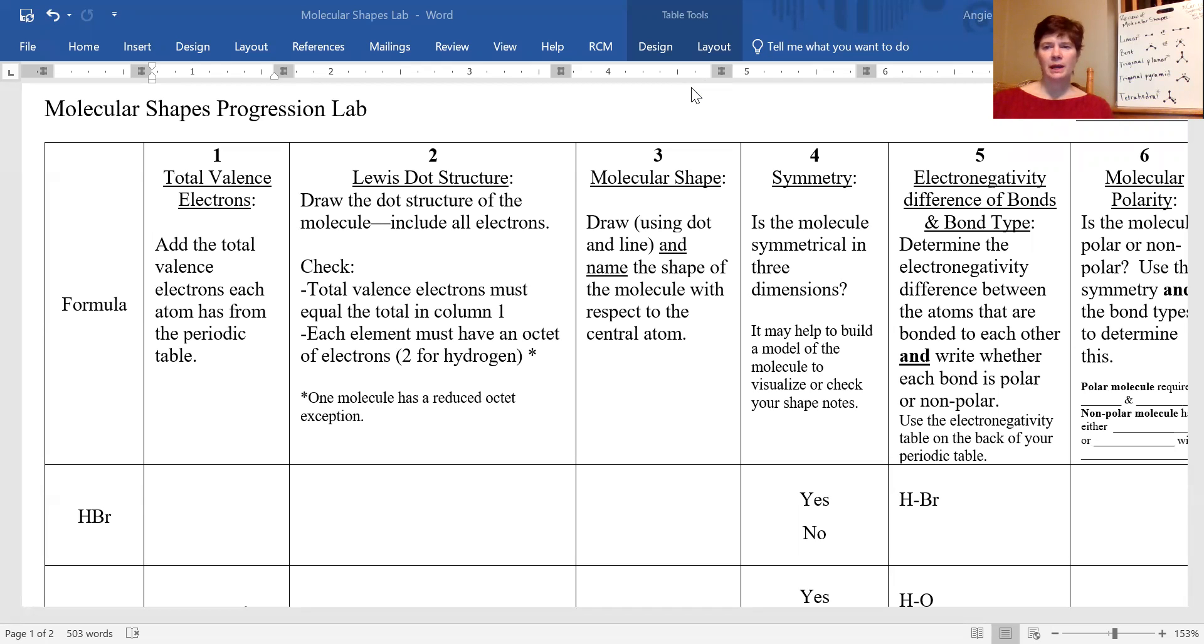So on the board behind me, I have those shapes written. You can see that they are linear, bent, trigonal planar, trigonal pyramid, and tetrahedral, and you should have those in your notes.